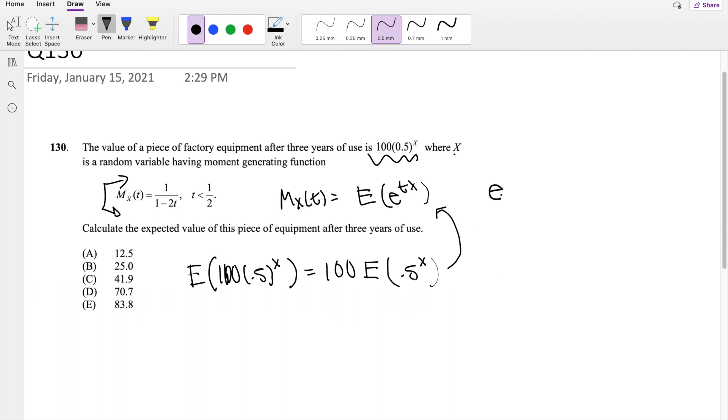So we also know that E to the natural log is equal to 1. So we can actually multiply anything by 1. So putting that substitution in there, we get 100 times E to the natural log of 0.5 to the X. And remember, there is also another rule.